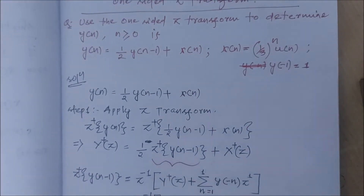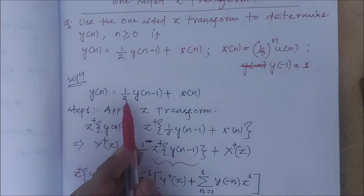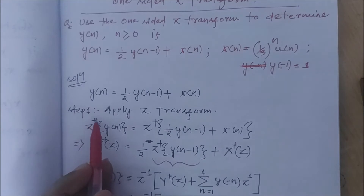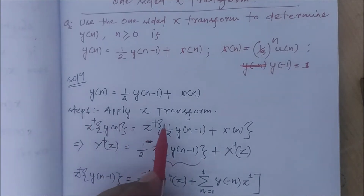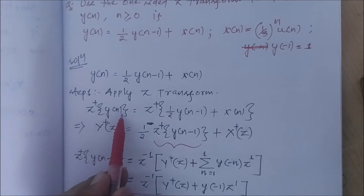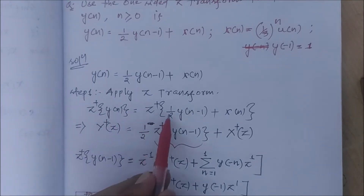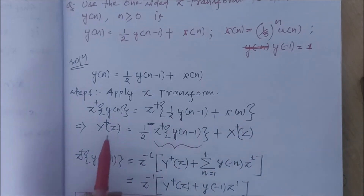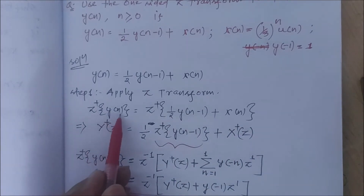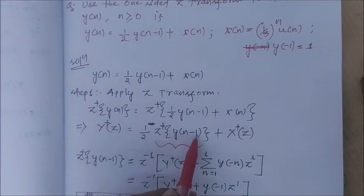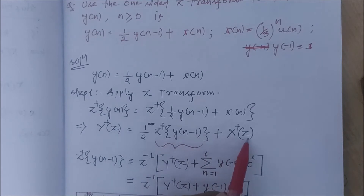Let us write down the equation first: y(n) = (1/2)y(n-1) + x(n). In step 1, we will take the unilateral Z-transform on both sides. So the Z-transform of y(n) is Y(z), equal to (1/2) times the Z-transform of y(n-1), plus X(z).